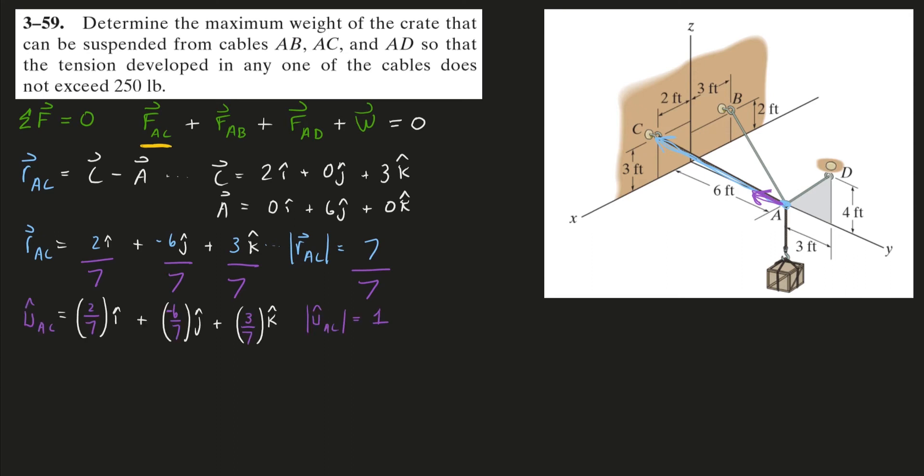Now I'm going to take another scalar and multiply it into each component of this unit vector. That scalar will be the magnitude of the force in this AC cable. We don't know what that exact number is, but that's no problem. I'll just keep it as an unknown. And there we go, that force vector is done.